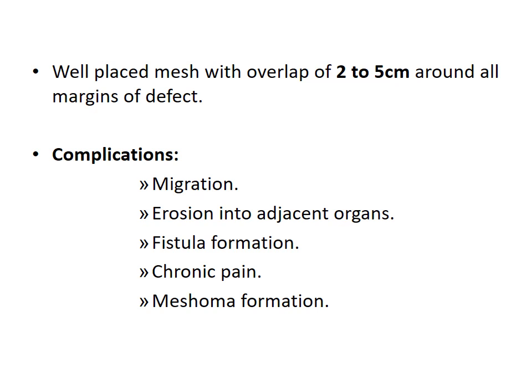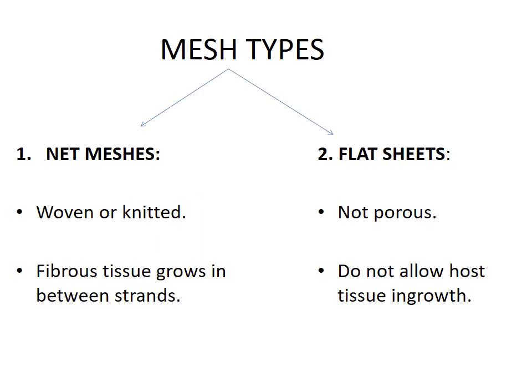Complications of mesh include: migration, erosion into adjacent organs, fistula formation, chronic pain, and meshoma formation. Mesh types: (1) net meshes — woven or knitted, fibrous tissue grows in between strands; (2) flat sheets — not porous, do not allow host tissue ingrowth.